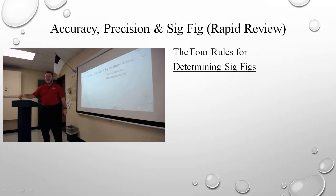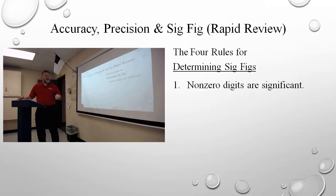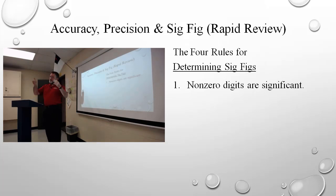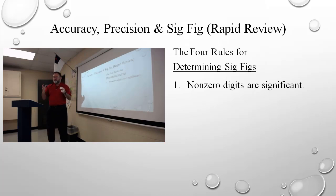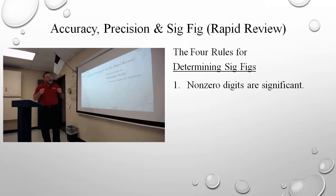All non-zero digits are significant. So if it's a one, two, three, four, five, six, seven, eight, or nine, they're significant. I would encourage you to write the number out and underline everything that you determine is significant. Cross out everything you know is insignificant, and then make sure before you make your final determination that everything is either underlined or crossed out. So all non-zero digits are significant.